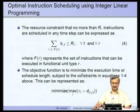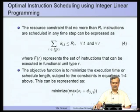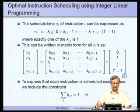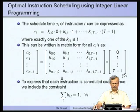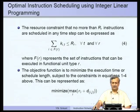The objective function is to minimize the execution time or schedule length — that is, the number of cycles — subject to the constraints in equations 1 to 4. We minimize the max of sigma_i + d_ij over all i. Solving this using an ILP solver gives us sigma_0 to sigma_{n-1}. This is the formulation of the integer linear programming version of scheduling, but as noted, it may be quite slow for practical usage.